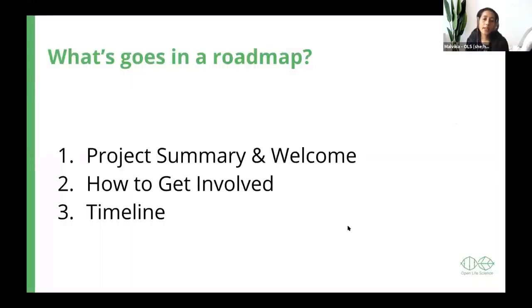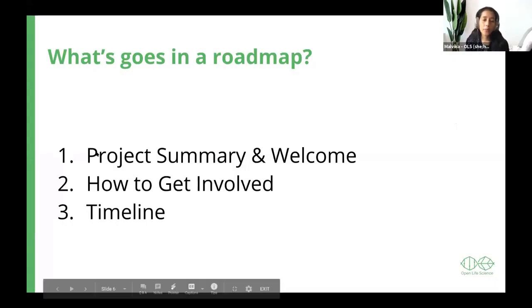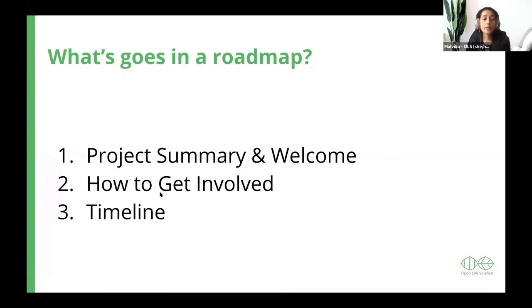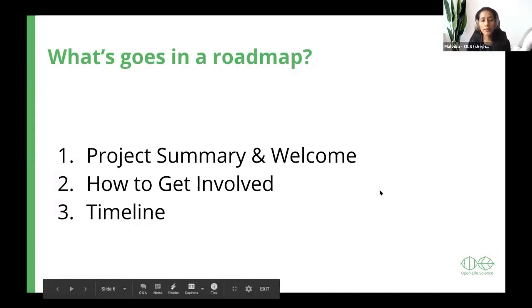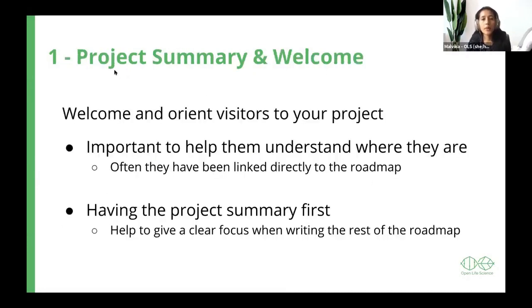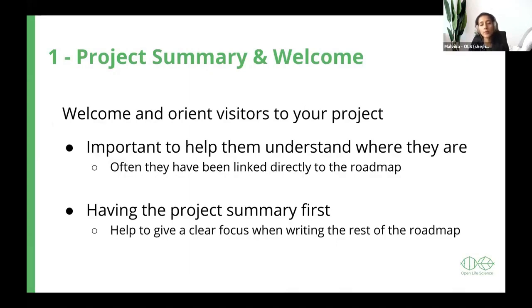So what goes into the roadmap? There are three things: first is the project summary and creating a welcoming space; telling people how to get involved and what the timeline is. The timeline may be changing quite a lot, but it's still a good idea to tell them where you are and what you'll be doing next. This project summary and welcoming space is required so people visiting your project can get oriented — where the information is, what resources you have. Often in a new project the biggest blocker is the newness of that space, and you want to help them feel familiar with it.